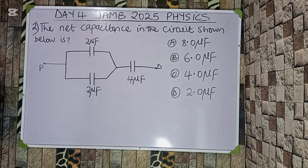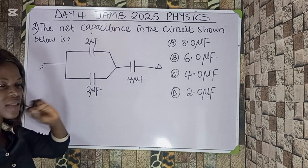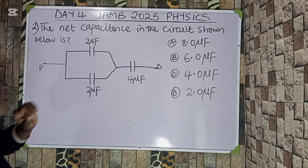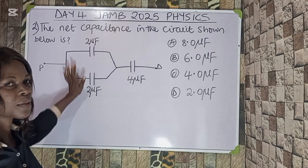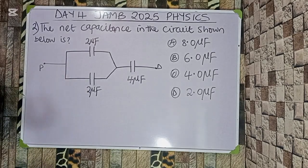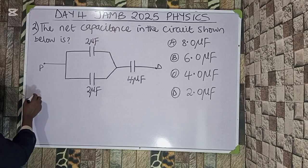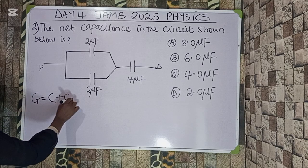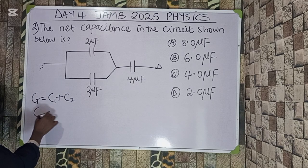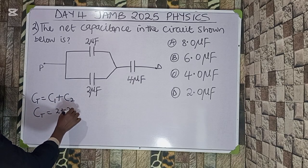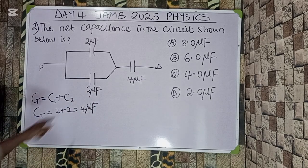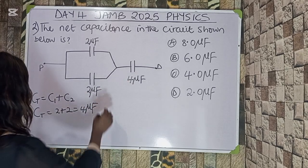Question two: the net capacitance in the circuit shown is what? We have this circuit and we need to find the net capacitance. When capacitors are connected in parallel, we add them. So for two capacitors in parallel: C_total = C₁ + C₂ = 2 + 2 = 4 microfarads.